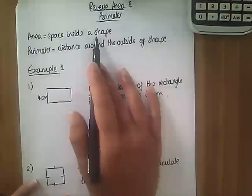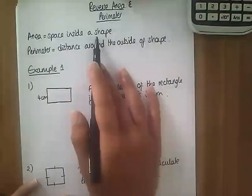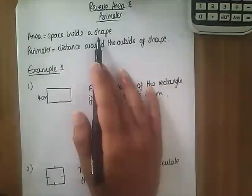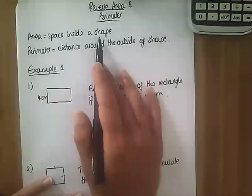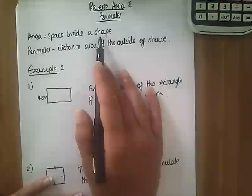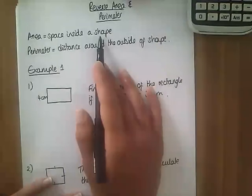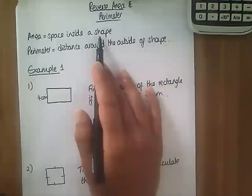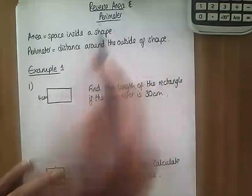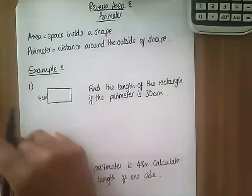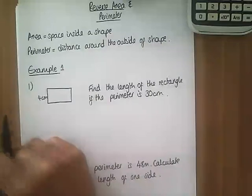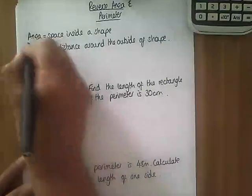Don't forget when you're doing area there are different formulas for different shapes. For a rectangle you do base times height or length times width, a triangle is base times height divided by 2, a square is base times height, a parallelogram is base times vertical height, whereas perimeter you're just adding all the sides as you go along.